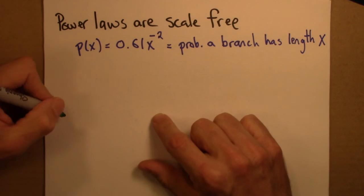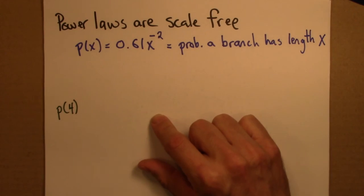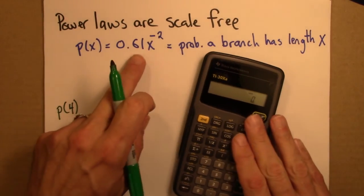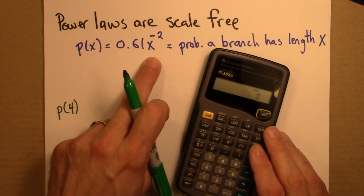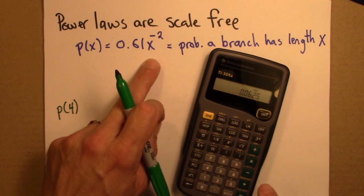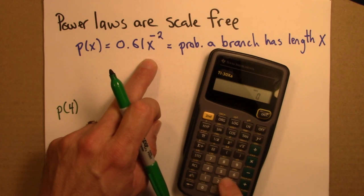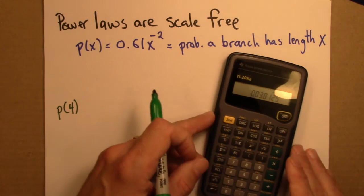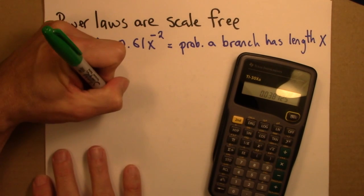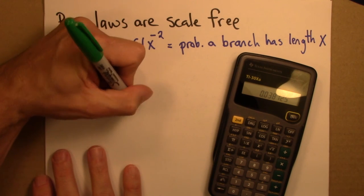So let's say we're interested in p(4). What's the probability that a branch has length 4? So let's see, I can figure that out by just plugging in 4 to this formula. So let's do that, 4 to the x minus 2, times 0.61, and I get 0.038125.